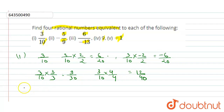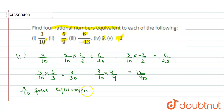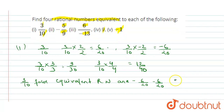Similarly, the 4 equivalent rational numbers for 3 by 10 are: 6 upon 20, minus 6 upon 20, 9 upon 30, and 12 upon 40.